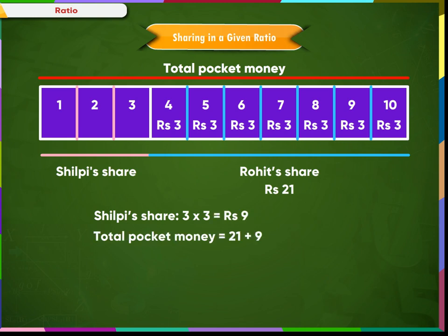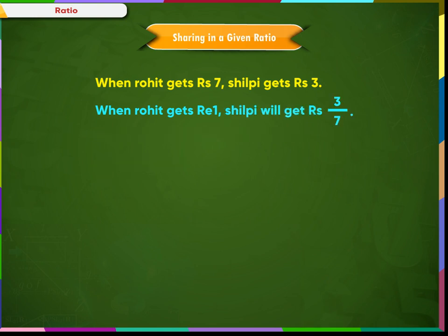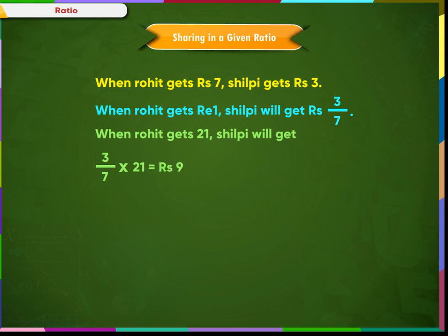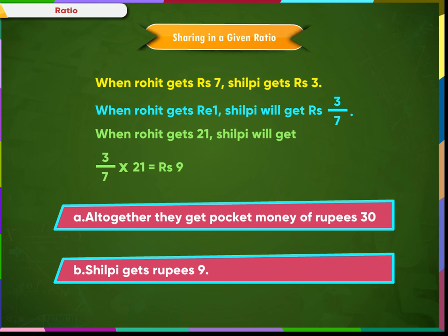Thus, altogether they get Rs. 9 plus Rs. 21 equal to Rs. 30. We can also solve this problem as follows: when Rohit gets Rs. 7, Shilpi gets Rs. 3. When Rohit gets Rs. 1, Shilpi gets Rs. 3 divided by 7. When Rohit gets Rs. 21, Shilpi gets 3 divided by 7 multiplied by 21, which equals Rs. 9. Thus, altogether they get pocket money of Rs. 30 and Shilpi gets Rs. 9.